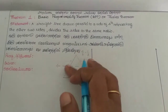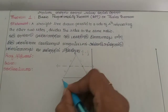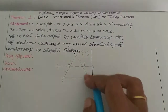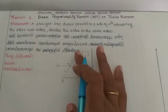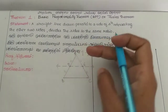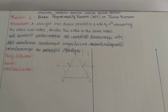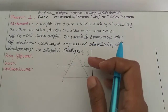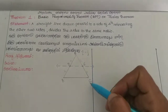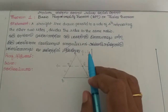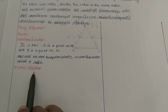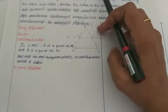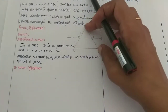For the proof: Given — triangle ABC. In this triangle, D is a point on AB and E is a point on AC. We need to prove the ratio of these sides are equal — that is, AD/DB equals AE/EC.